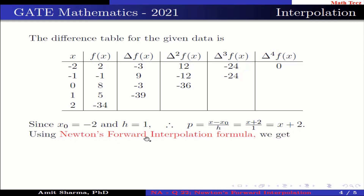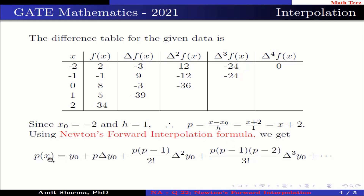By using Newton's Forward Interpolation Formula, P(x) = y₀ + p·Δy₀ + p(p-1)/2! · Δ²y₀ + p(p-1)(p-2)/3! · Δ³y₀ + ... Here y₀ = 2, Δy₀ = -3, Δ²y₀ = 12, and Δ³y₀ = -24.